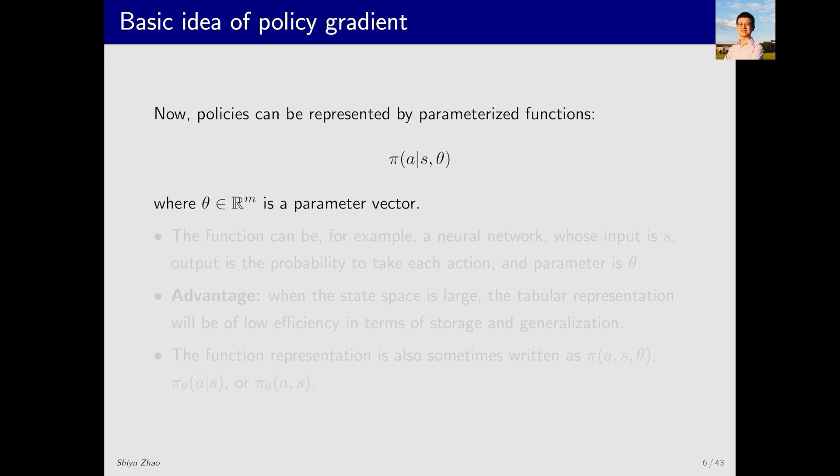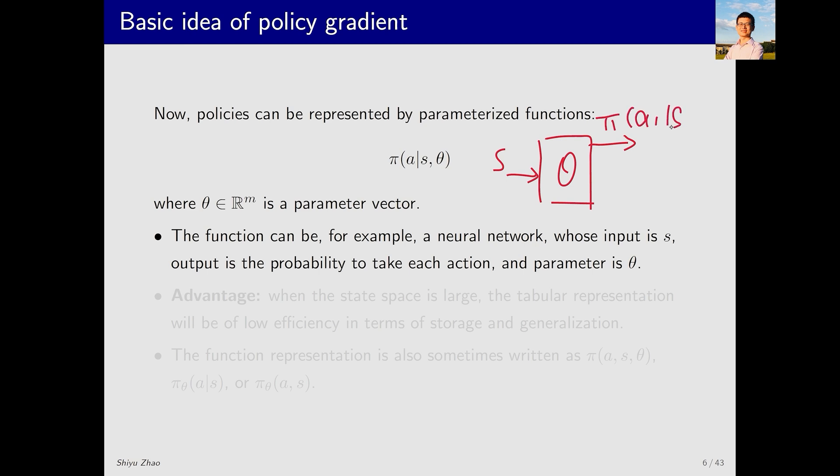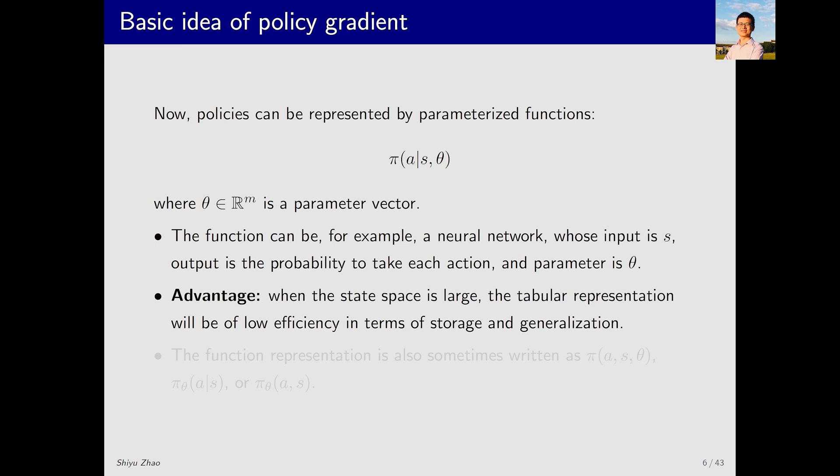Now we will replace the table with a function. This means the notation for the policy π will also change. It is still similar to before, but the difference is that now there's an additional θ. This θ is a vector which represents the parameters of the function π. The most commonly used form of this function today is a neural network. For example, here's a neural network with parameters θ. The input to the network is a state s and the output is the probability distribution over all possible actions. For instance, π(a1|s,θ) through π(a5|s,θ), assuming there are five actions. Previously, when we introduced value functions, we use w to represent the parameters of the value function. Now for policy functions, we use θ to represent the parameters.